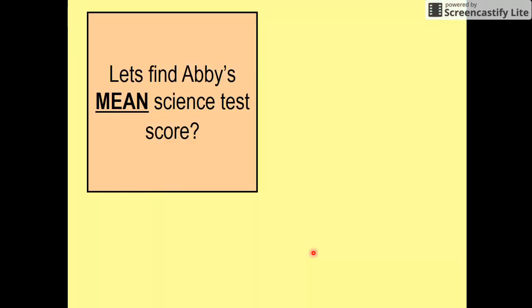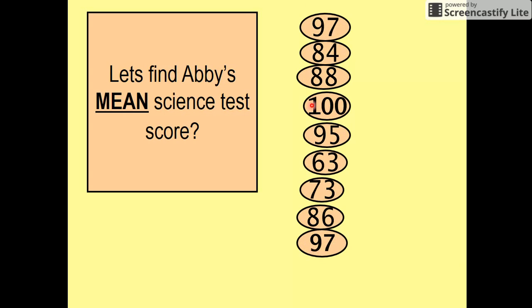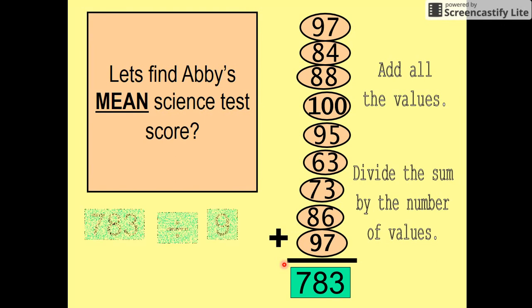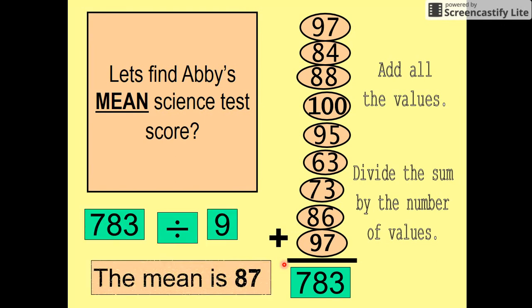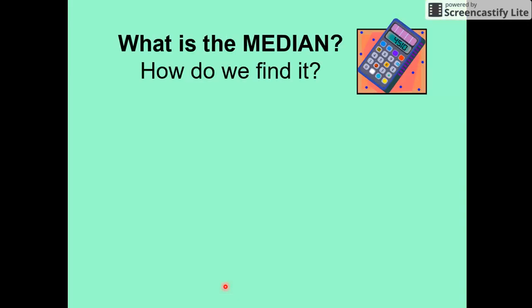Let's find the mean of Abbey's science test. Those are all her science tests. We add them up and we get 783. Now let's count how many: one, two, three, four, five, six, seven, eight, nine. So she's given us nine tests, so we divide this by nine. Divide the sum by the number of values, and the mean is 87. So that is what her average is.